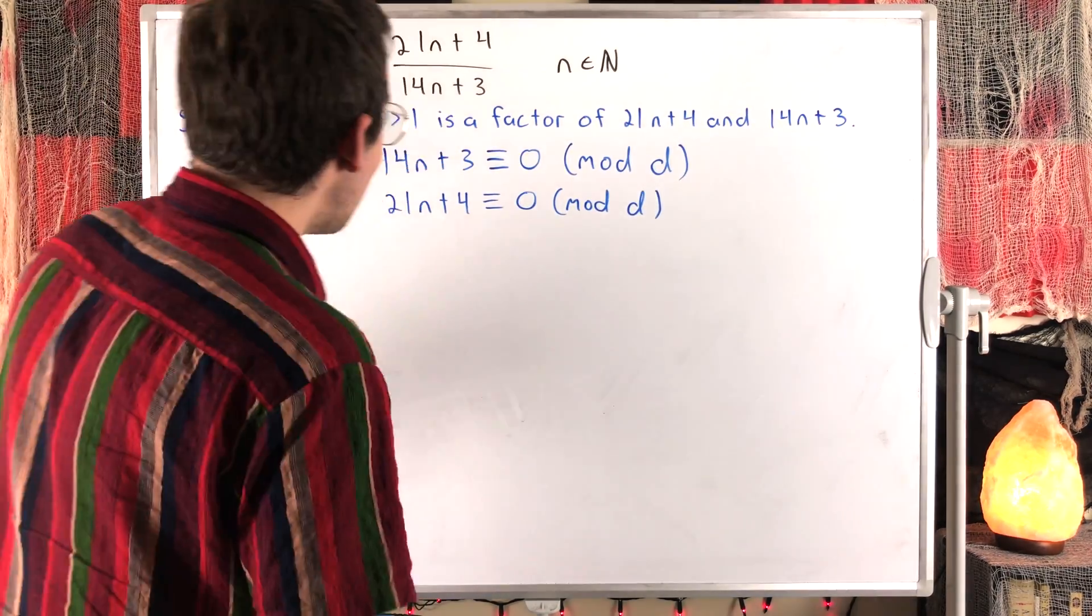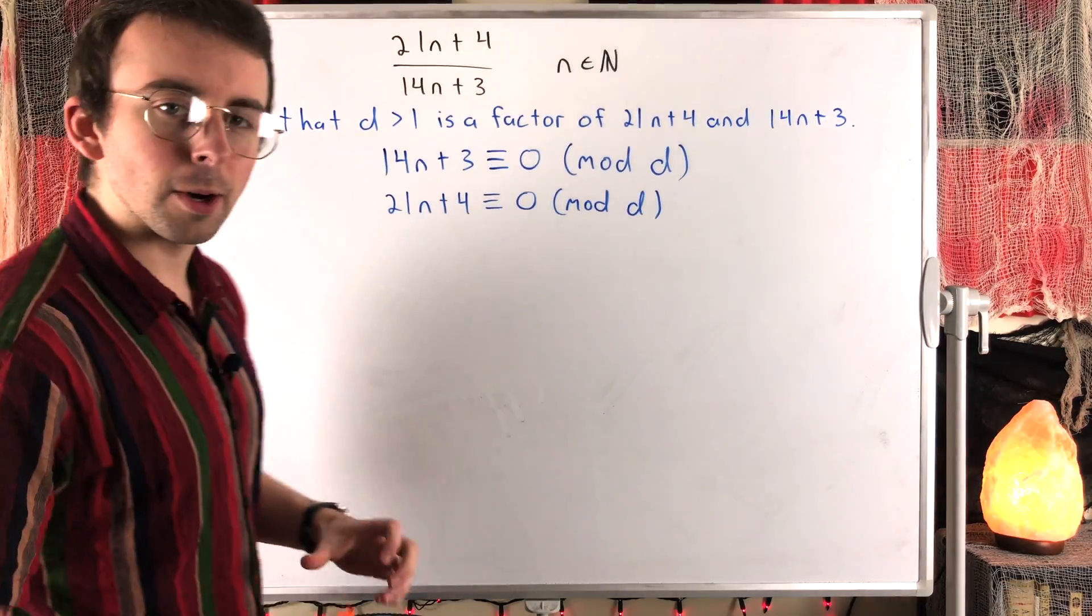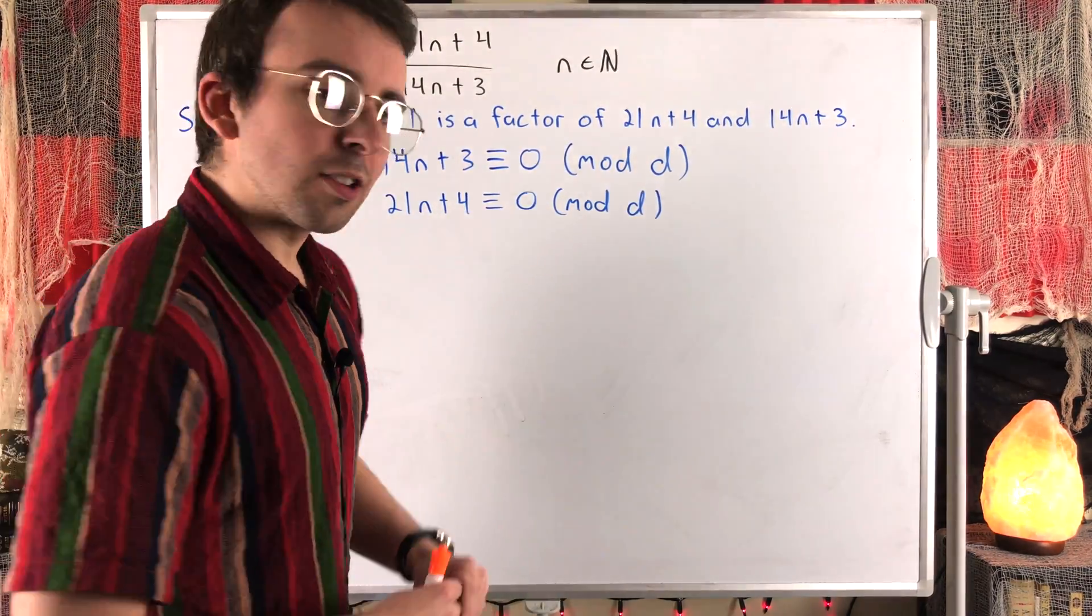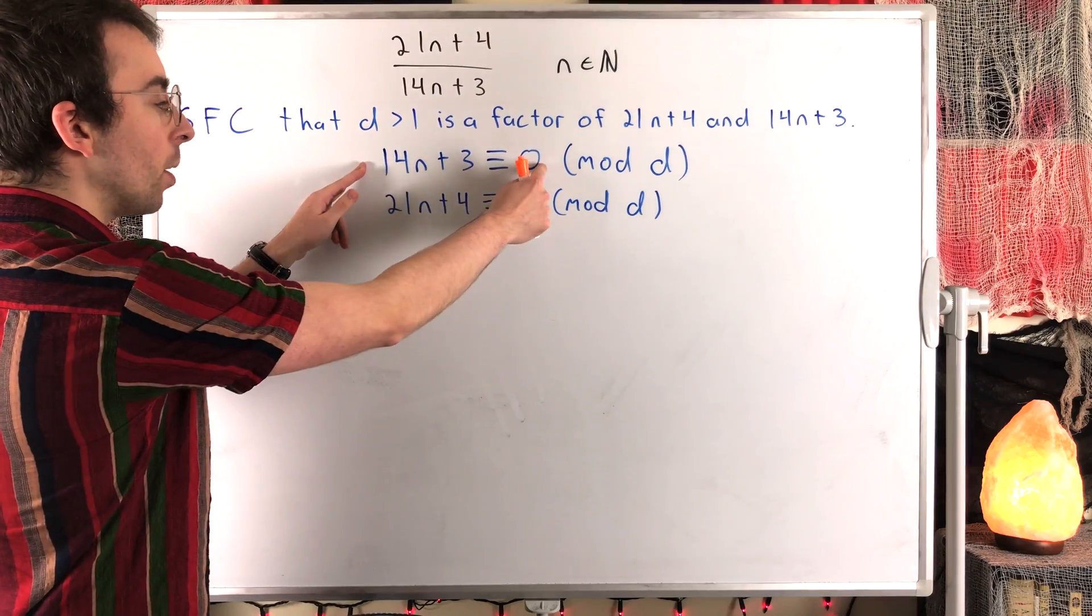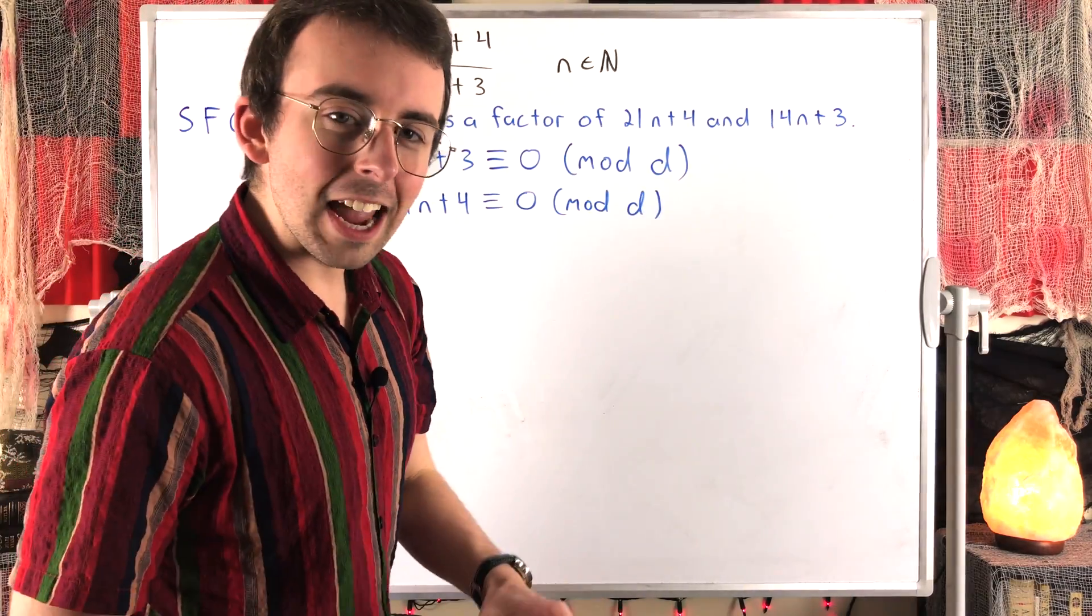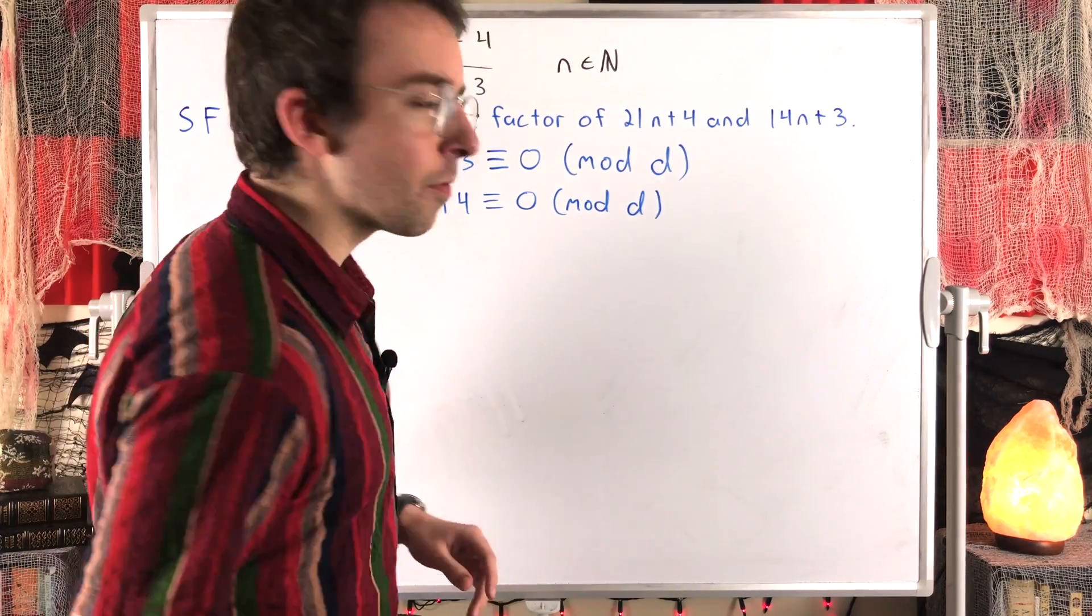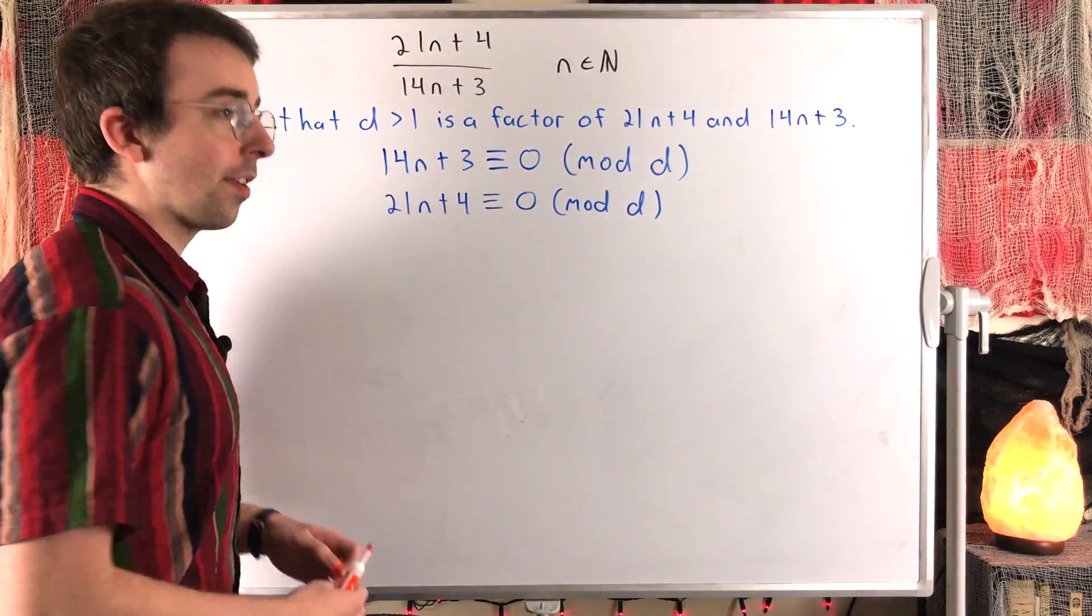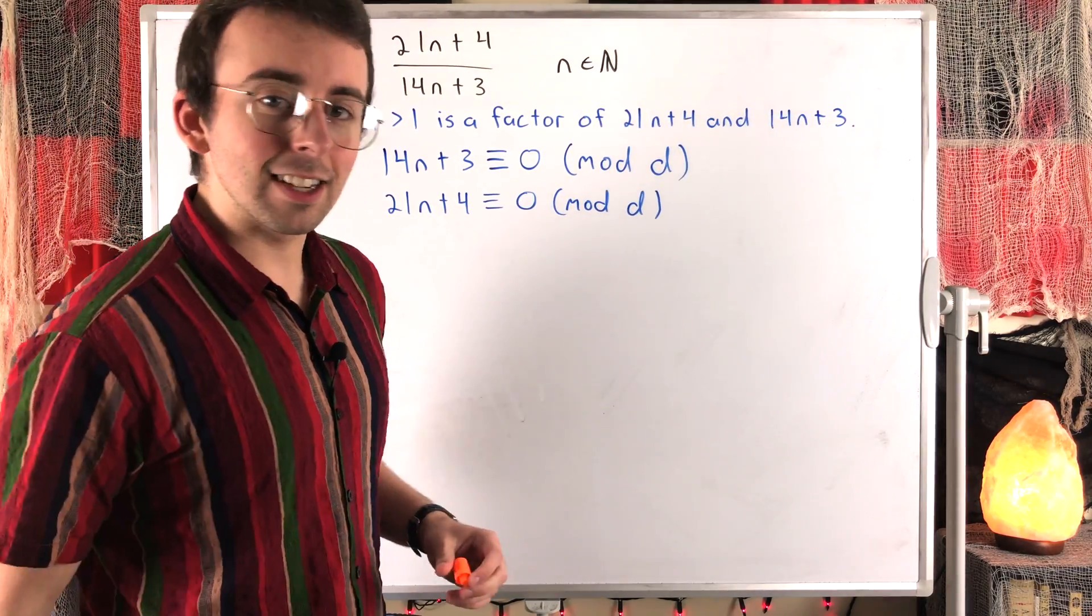So what we would like to do is multiply this congruence by some number, and this congruence by some number, so that we can end up combining them so the n terms cancel out. In other words, we're trying to find a common multiple of 21n and 14n. What can we multiply this by, and then what can we multiply this by, so that the n terms are the same, and we can use both congruences to eliminate the n. You'll see what I mean if you're not following what I'm saying in just a minute. There are of course some systematic methods we could use to find the least common multiple of 14n and 21n, but in this case it's pretty easy to find.